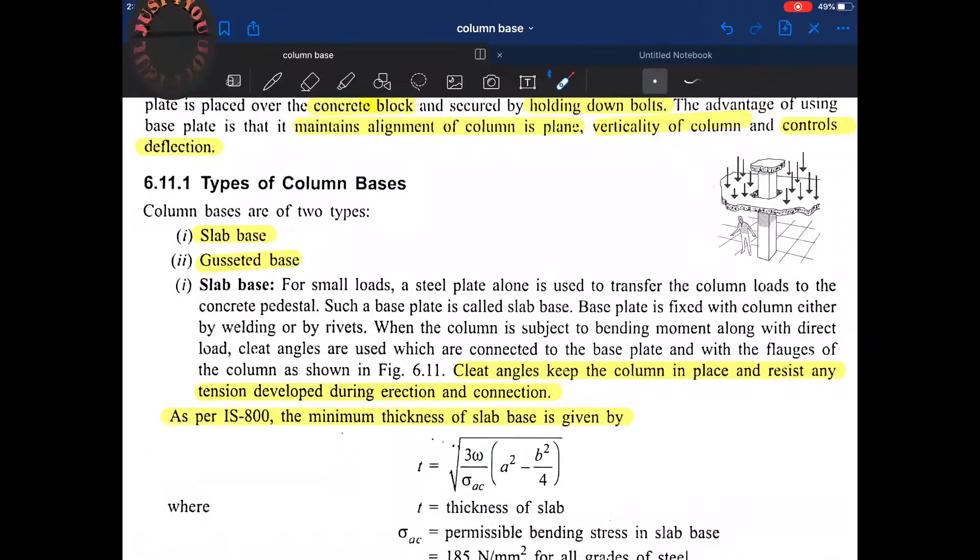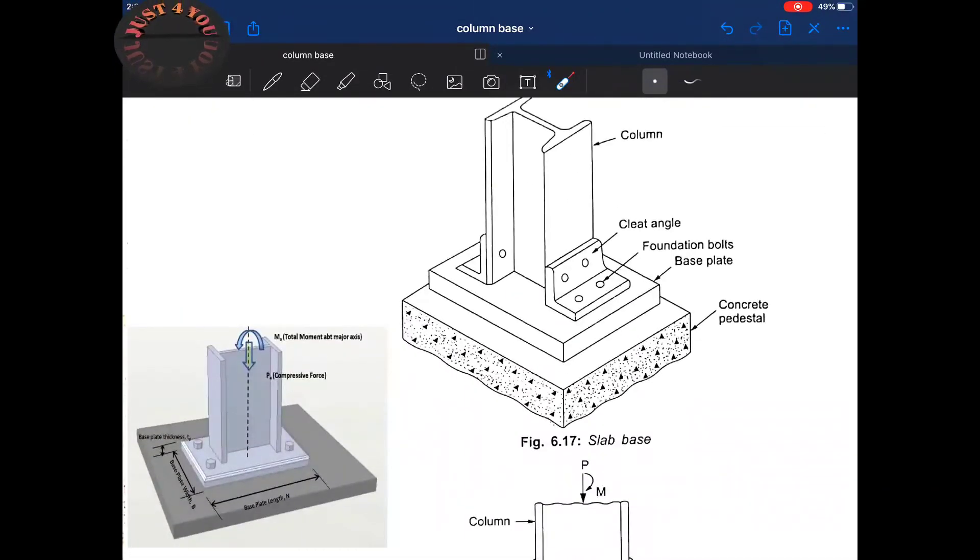Now types of column bases. There are two types: slab base and gusseted base. Slab base is for lighter loads and gusseted base is for heavier loads. Here this is the example of a slab base. Only a steel plate is used for transferring the loads along with the cleat angles.